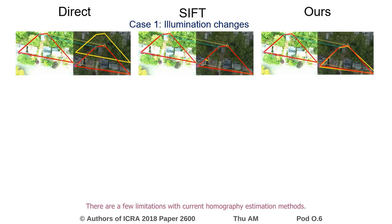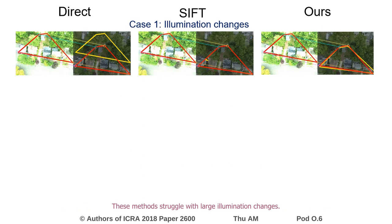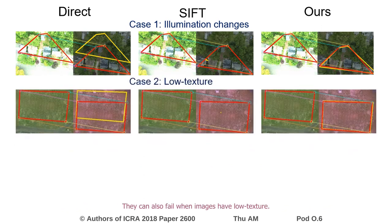There are a few limitations with current homography estimation methods. The two most common approaches are direct methods and feature-based methods like SIFT. These methods struggle with large illumination changes, and can also fail when images have low texture.